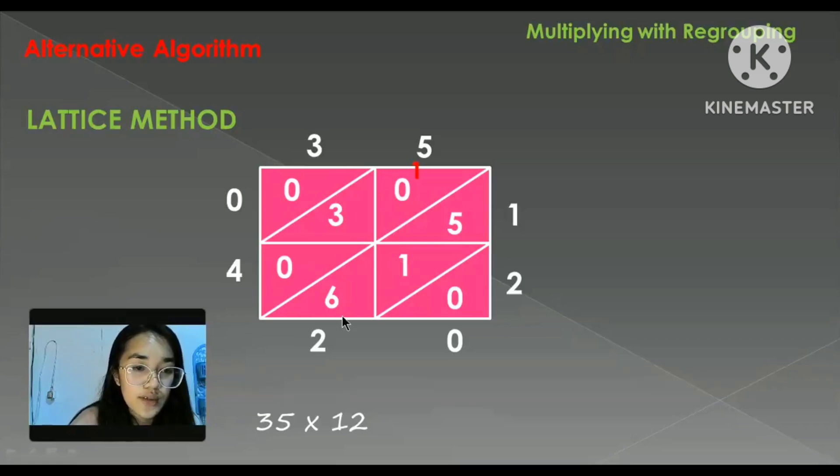And since it's 0, so 0. Now we will get the digit here. So the answer is 420. The same, simple as that, the same answer.